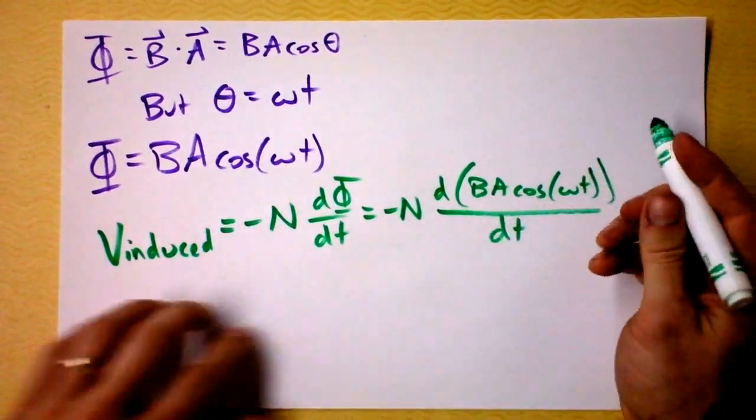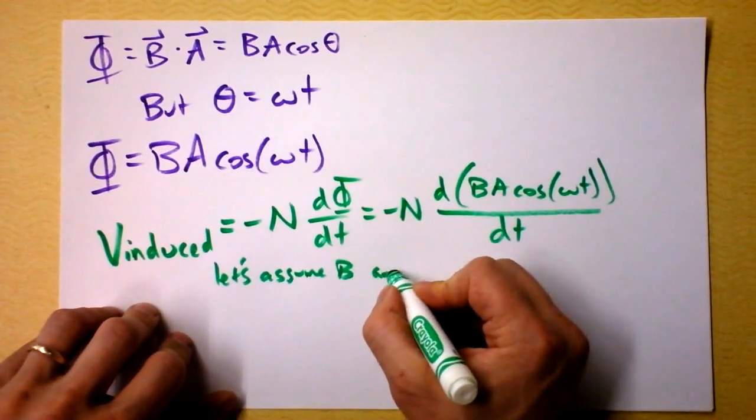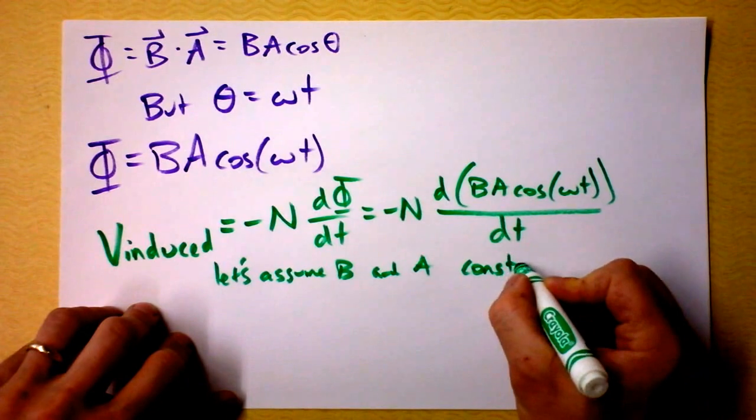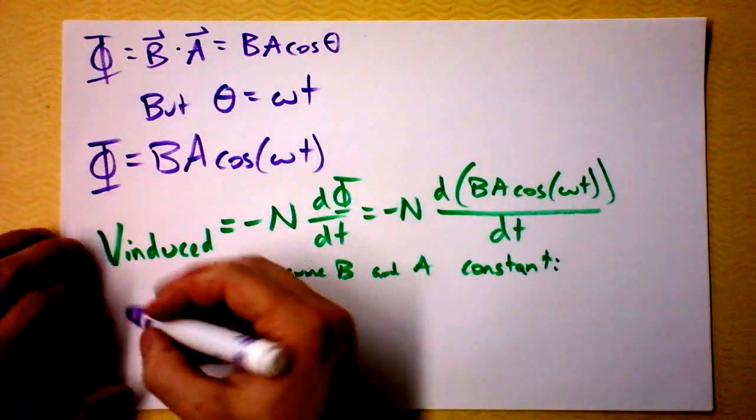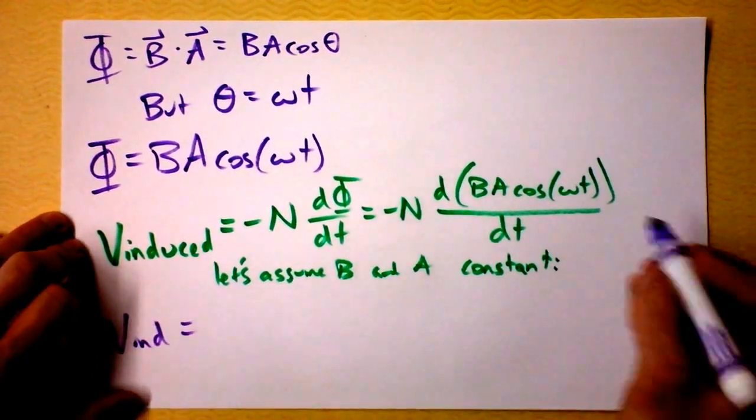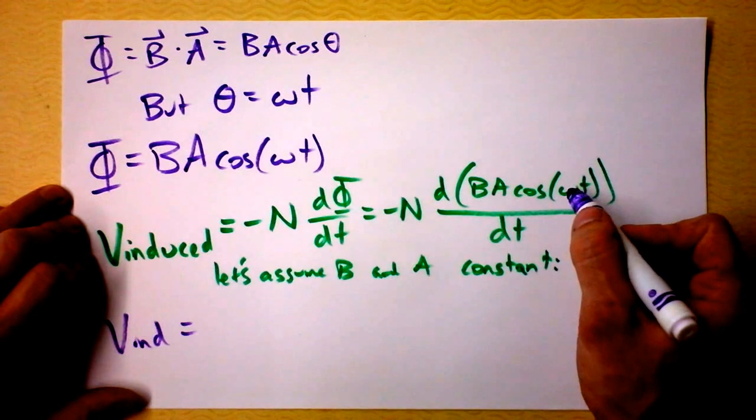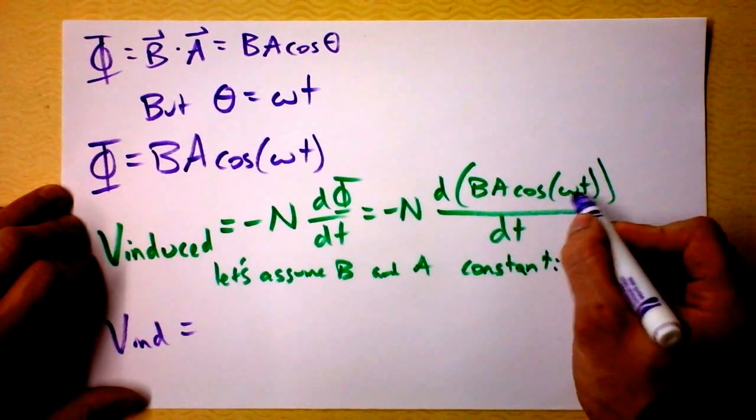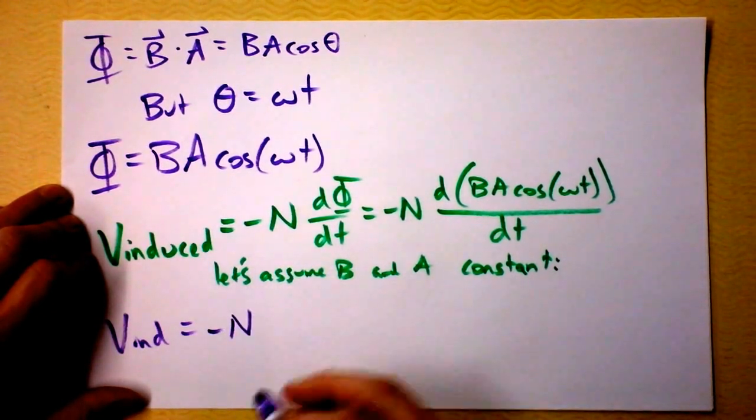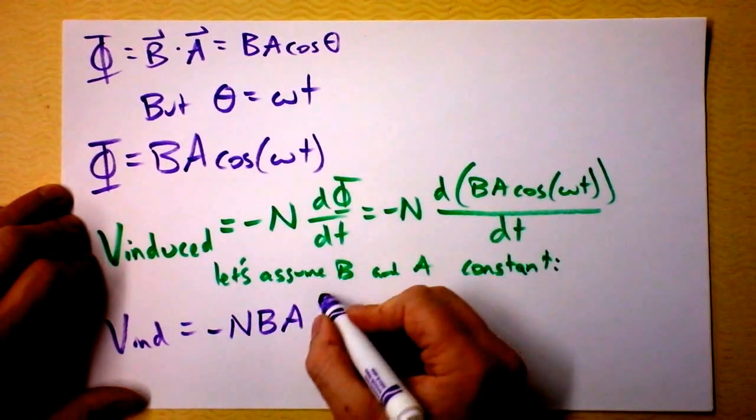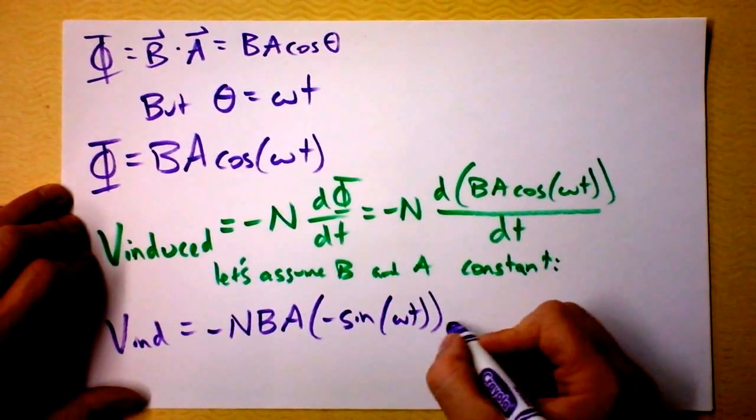You really want to know which of these is changing. Let's assume B and A will be held constant. That will make our job a little bit easier. In that case, we can conclude that V induced is, well I'm just going to get the derivative of cosine omega t. I get a chain rule though because I'll take the derivative of the cosine and get myself a negative sine. And then I'll also take the derivative of omega t and I'll get an omega out front. So watch what happens here.